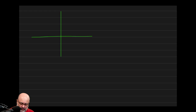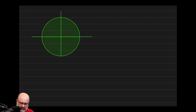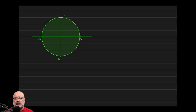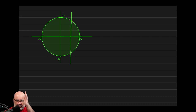So here we have a circle. The radius is 2, so this number is 2, this number is 2, this is negative 2, and this is negative 2. Now we have cross sections that are perpendicular to the x-axis, which means all the cross sections go in that direction — when you draw something this way, you're perpendicular to the x-axis.